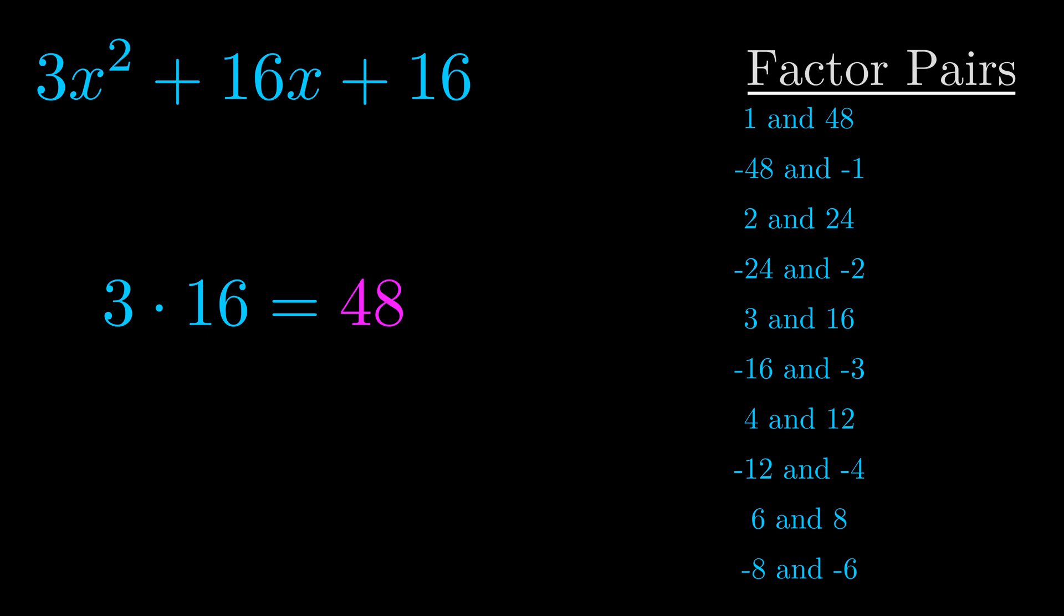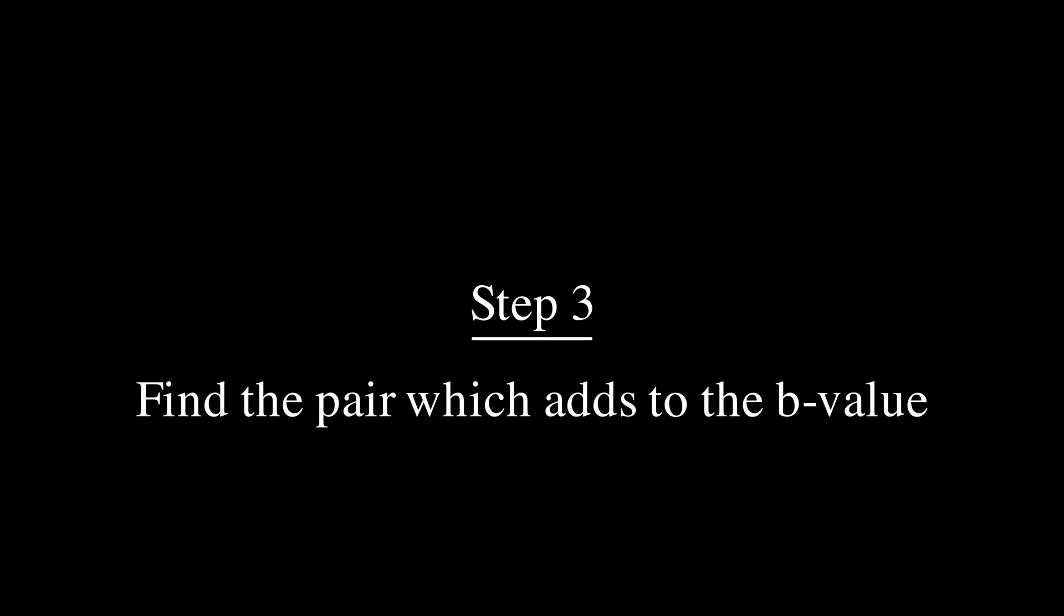Now once you have these factor pairs the goal is to find which of these pairs adds to the b value. The b value is the coefficient on the x term.